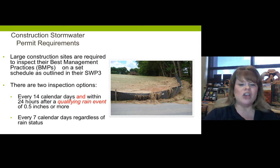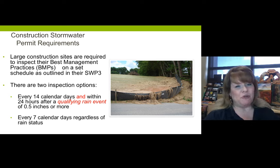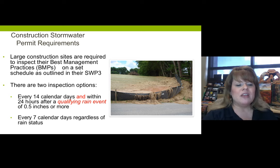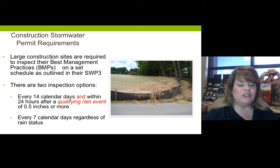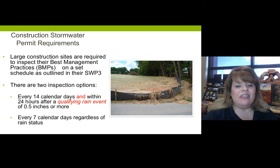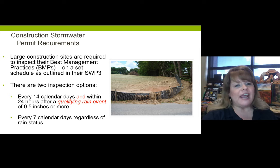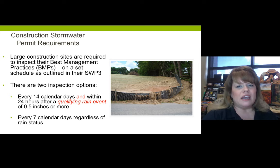Large construction sites are required to inspect their best management practices on a set schedule outlined in their stormwater pollution prevention plan. The general permit allows for two options. Option one: the large construction site is required to inspect every 14 calendar days and — big word 'and' — within 24 hours of a qualifying rain event of 0.5 inches or more. That 'and' part is a challenge if you've got ten construction sites going on and it rains over a holiday weekend — you have to go out every time within 24 hours.